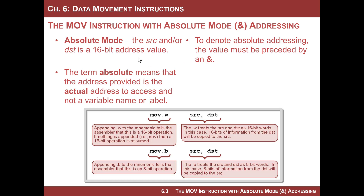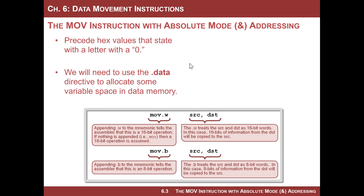To denote absolute addressing, you have to put an ampersand in front of the address. That's because you're providing a number and the assembler needs to know that the number is not an identifier of something else — you're providing a hard-coded address. Remember, we're using addresses, so a lot of these are going to be hex characters, and if your word starts with a hex letter, you've got to make sure to put a zero in front of it.